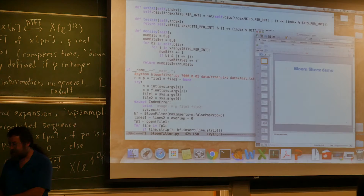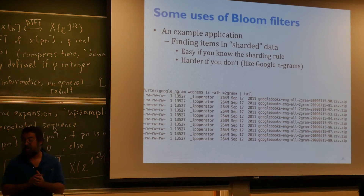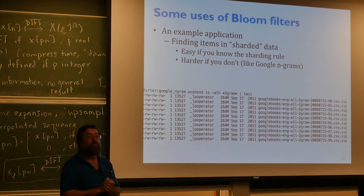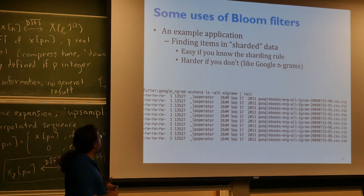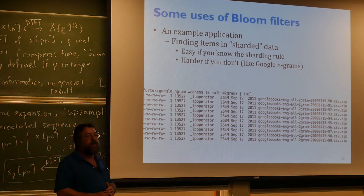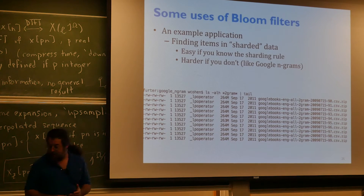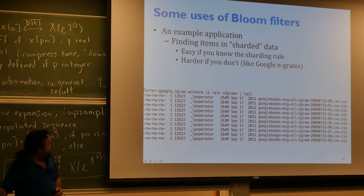Very simple data structure. Let's talk through a few things you might want to do with a Bloom filter. One thing that comes up when working with big data sets: you often get a sharded version — no one sends you a single 500-megabyte file, instead they send 50 files of 10 megabytes. Here's a bit of Google ngram data — each file is about a quarter of a gigabyte and there are about 100 of them. Typically this is data sharded by a Hadoop system.